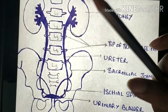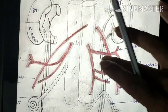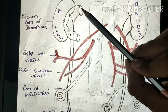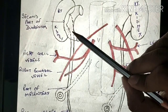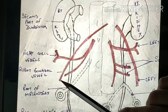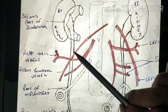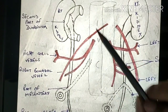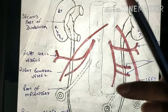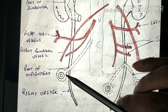The right ureter is covered by the second part of the duodenum in its initial part. The abdominal portion of the right ureter is also crossed entirely by the gonadal vessels, which are direct branches of the abdominal aorta. On the right side it descends lateral to the inferior vena cava and is crossed entirely by the right colic vessels and the ileocolic vessels. It also passes behind the lower part of the mesentery and the terminal ileum.